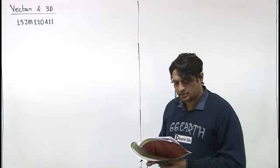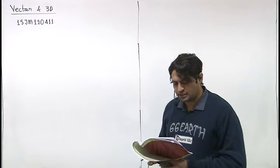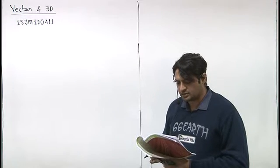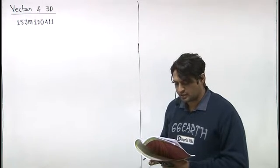In this question, we are given that A, B, C, D are four points in a plane with position vectors vector A, vector B, vector C, vector D.